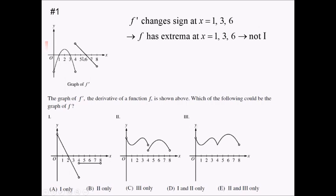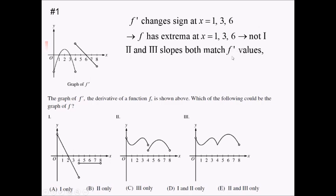Looking at some of the other slopes: f prime is negative from 0 to 1, and graphs 2 and 3 are both decreasing on that interval. F prime is positive from 1 to 3, and graphs 2 and 3 are increasing there. If you look at the rest of the slopes, you're going to see that 2 and 3 actually both match all of the slope values for the f prime graph. The only difference between 2 and 3, if you look really closely, is that there's a discontinuity, a jump, at x equals 4, where 3 just has a cusp and these are all linked up.